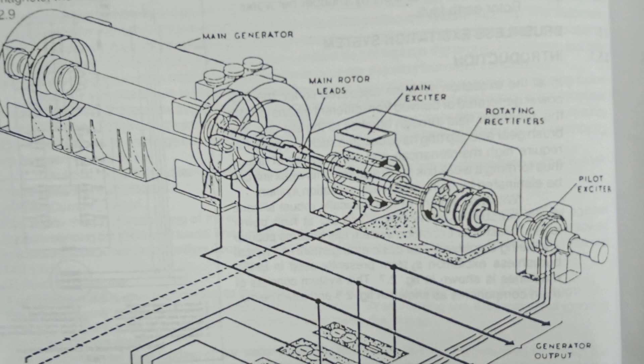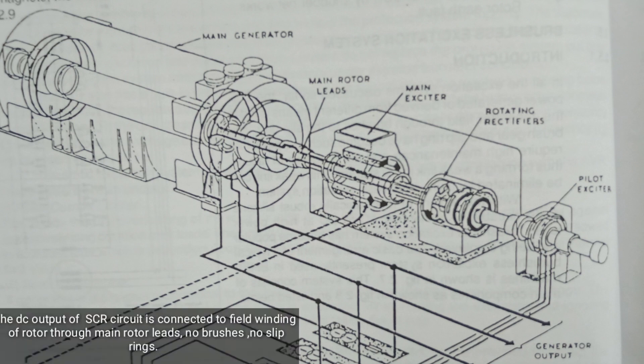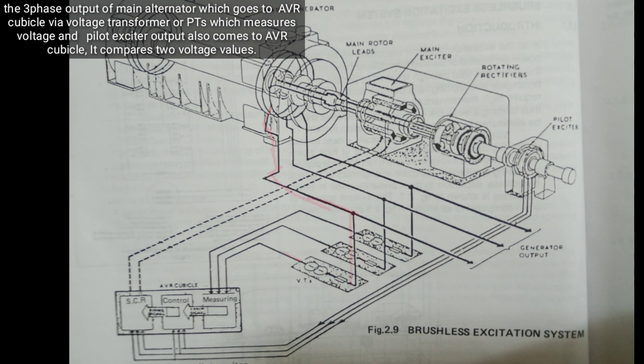The DC output of the SCR circuit is connected to field winding of the rotor through main rotor leads. No brushes, no slip rings. Here is the three-phase output of the main alternator which goes to the AVR cubicle.